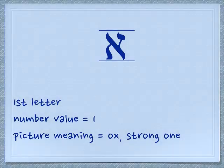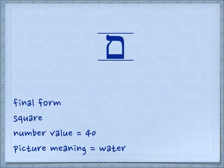Aleph is silent; we're only going to hear the vowel that goes with it. Its number value is one and its picture meaning is an ox or the strong one. Our other letter today is the final form of the Mem, the Mem Sofit. It has a square kind of shape and its number value is the same as the regular Mem — 40 — and the picture meaning is water.